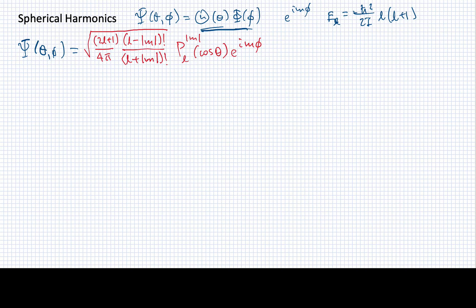Now with this normalization constant, what that means is that these functions are going to be normalized. If I take the square magnitude of this and integrate it over all the values of theta and phi, I should get 1.